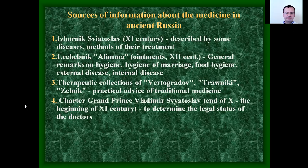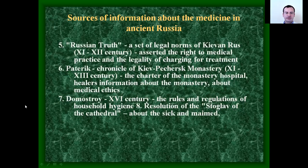Sources of medical information included: the Izbornik of Svyatoslav, which described signs of disease and methods of treatment; the Leche­vnik, with general remarks on hygiene, marriage hygiene, food hygiene, and external and internal diseases; the Therapy Collection with practical advice of traditional medicine; Charters — Grand Prince Vladimir Svyatoslav determined the legal status of the doctor; Russian Truth — a set of legal norms; the Paterik, a chronicle of the Kiev-Pereyaslavl monastery; and the Domostroi — rules and regulations of household hygiene.